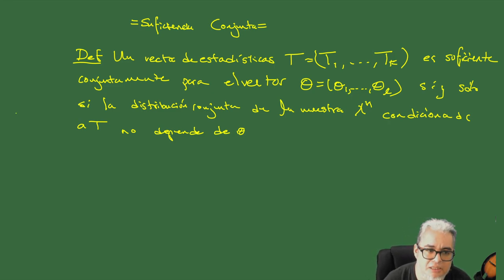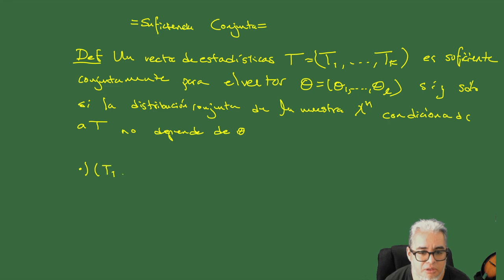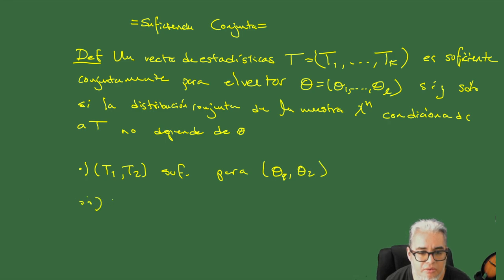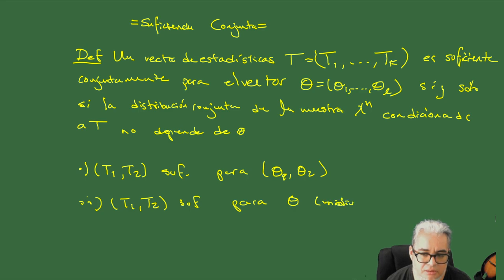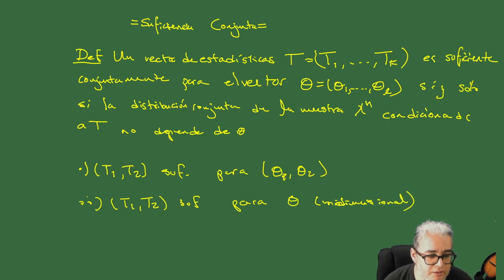Nada más aquí hay que tener cuidado cuando hablamos de suficiencia conjunta: podemos tener que, por ejemplo, T1 y T2 son suficientes para dos parámetros, o que dos estadísticos son suficientes para un solo parámetro, que es un caso unidimensional. Entonces vamos a ver algunos ejemplos de esto, y vamos a ver una generalización del teorema de la factorización.